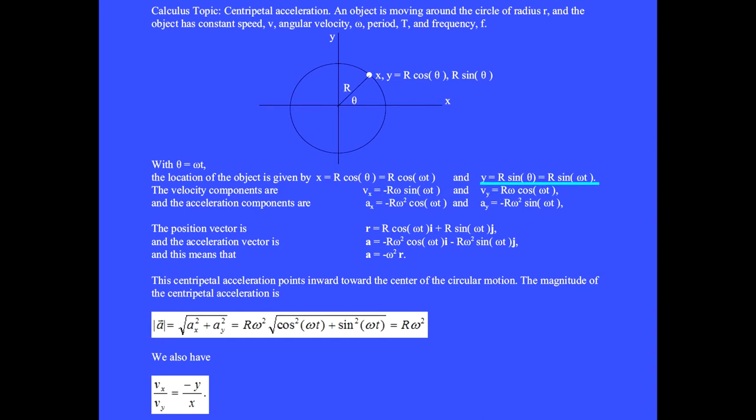The time derivative of y gives v sub y and we have r omega cosine omega t because this sine turns into a cosine.